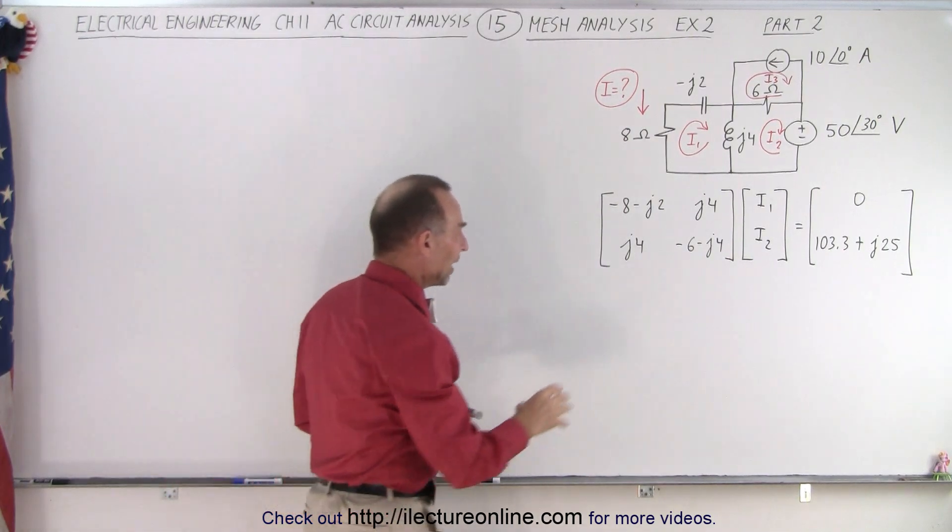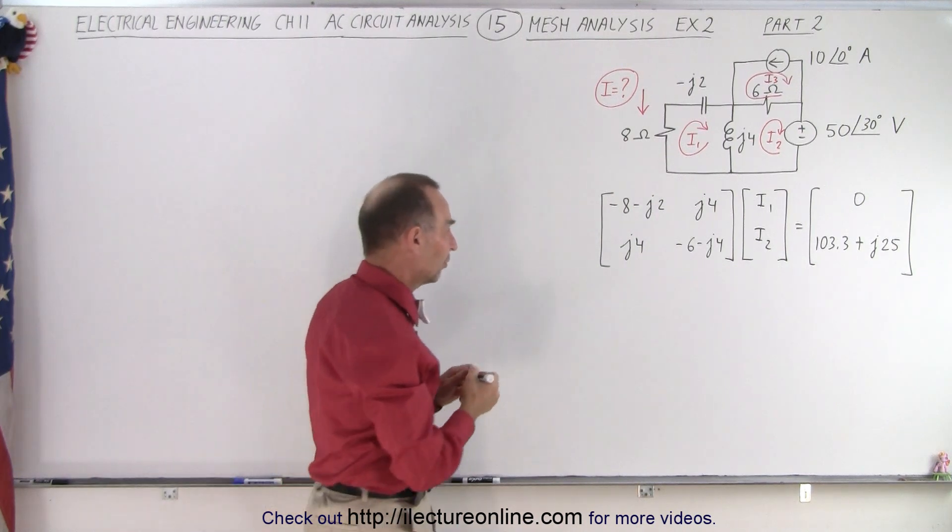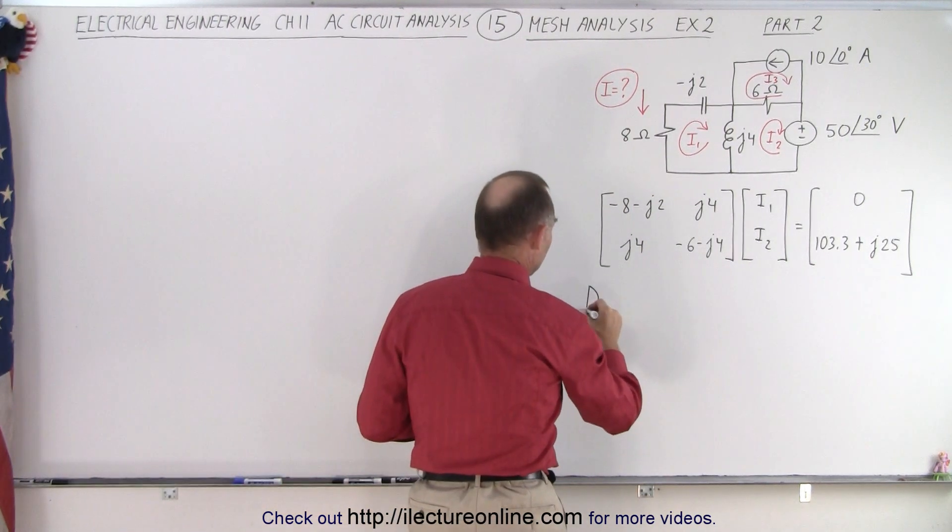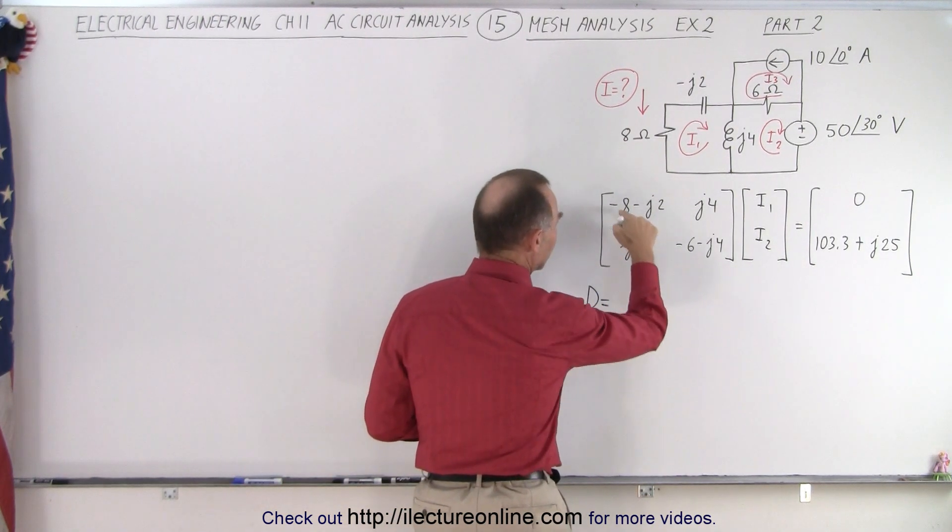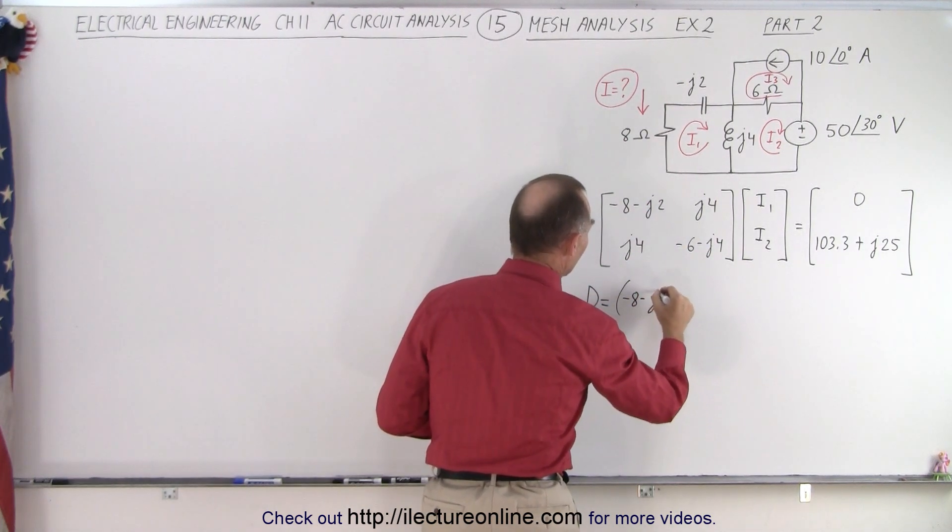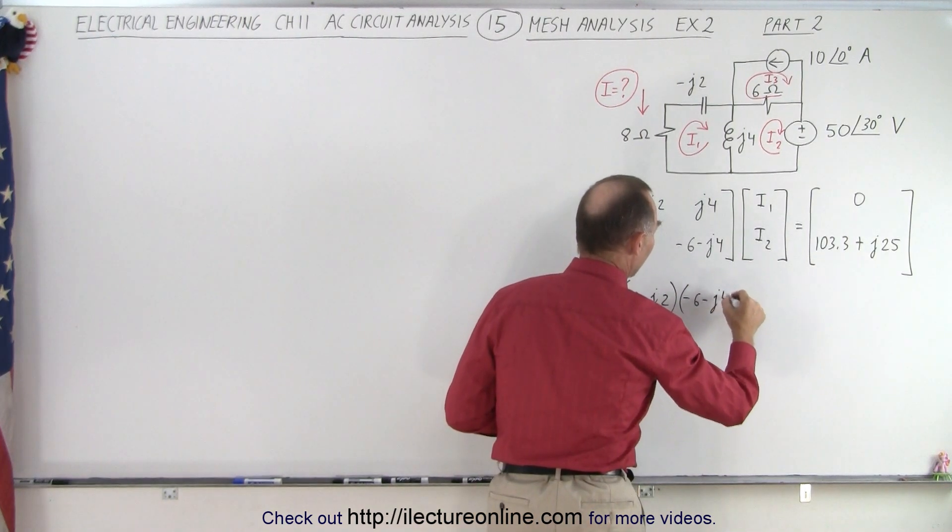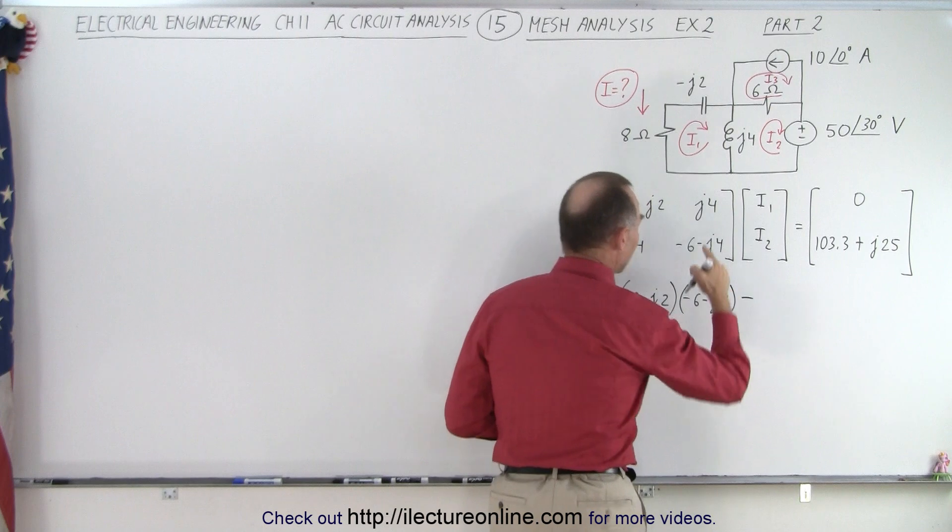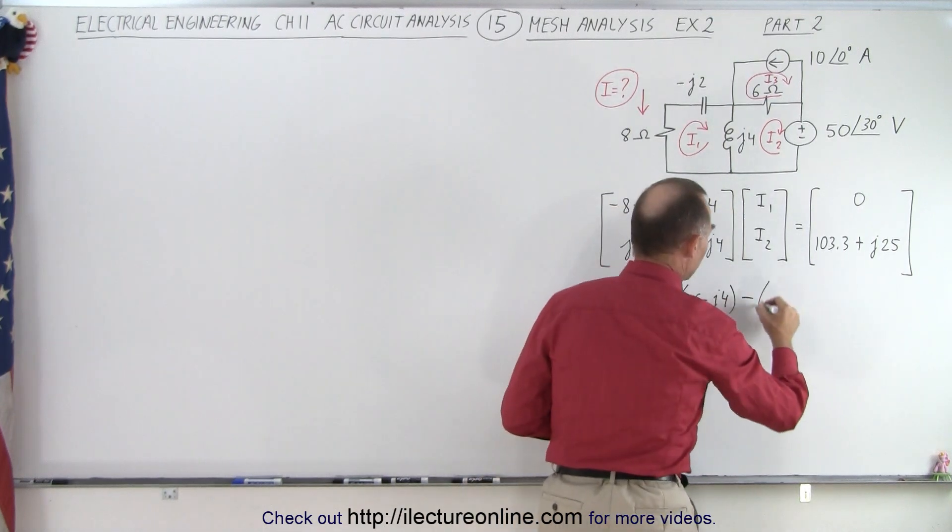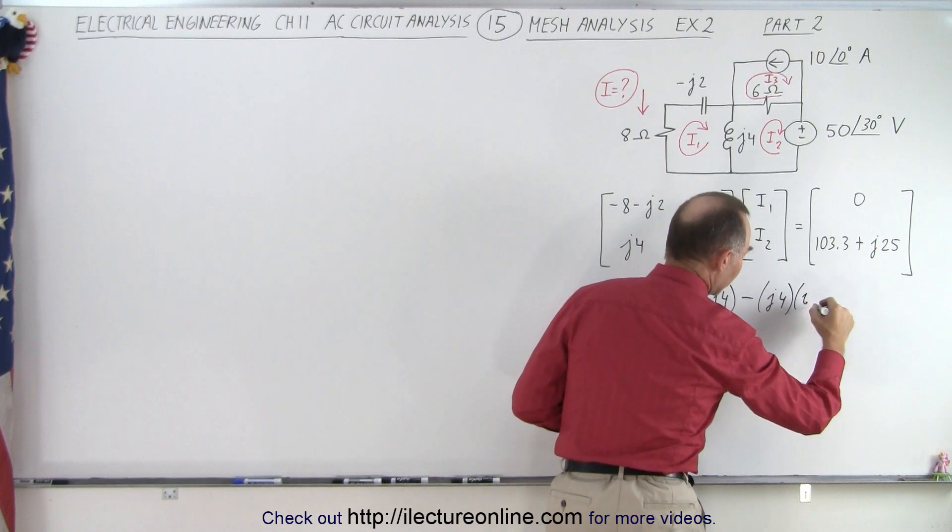So first we need to find the value of the determinant because we're going to use the method of determinants to solve this. We take the determinant, and that's going to be the product of these two right here, so it would be minus 8 minus J2 multiplied times minus 6 minus J4, and now subtract from that the product of these two. That would be J4 times J4.